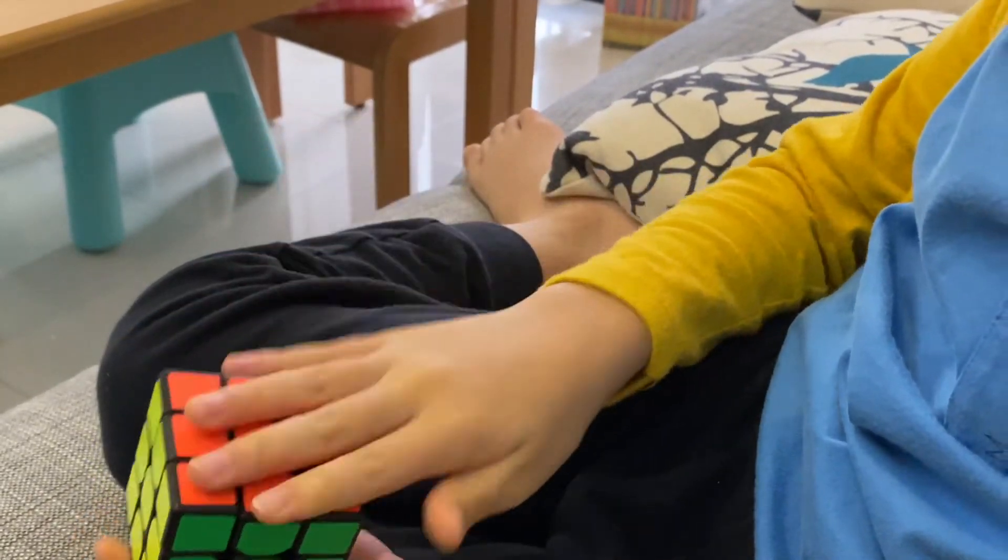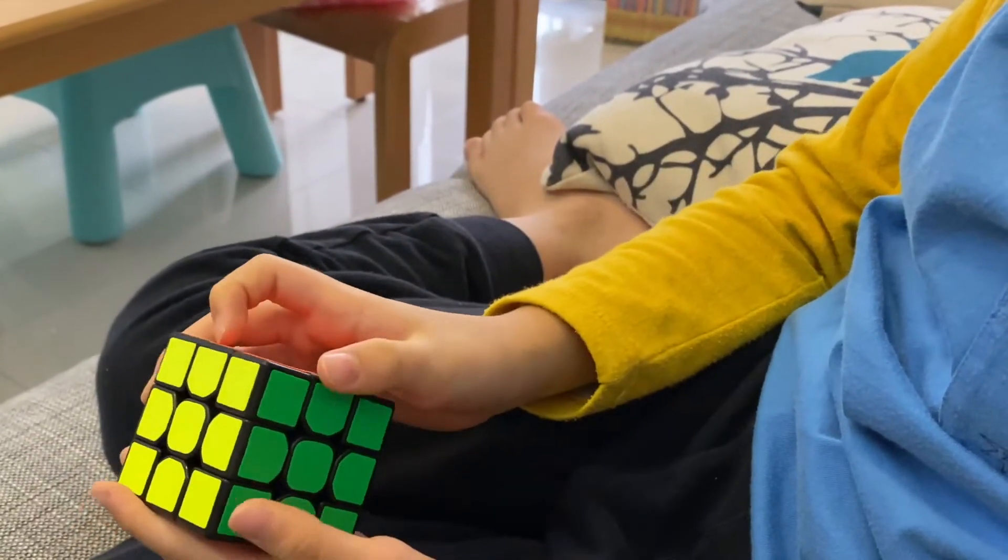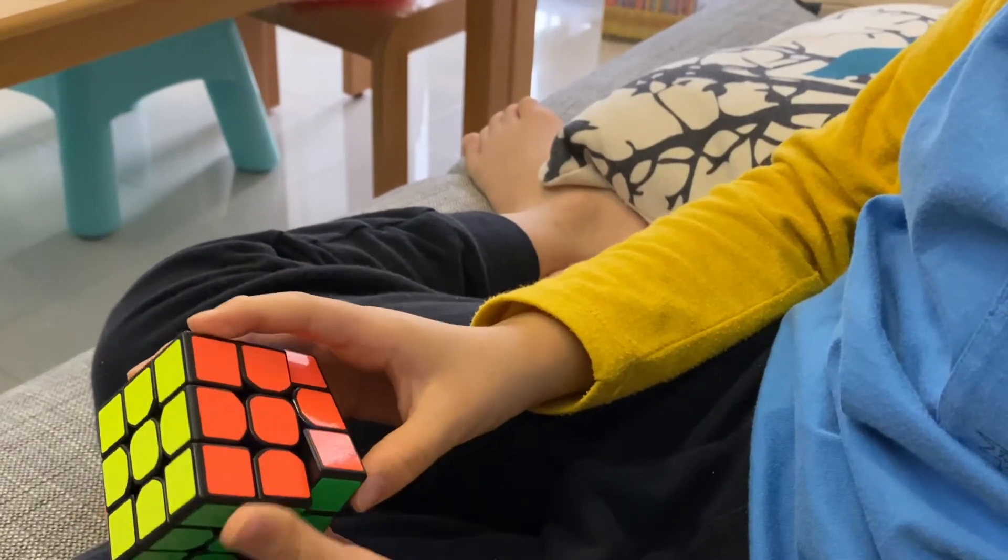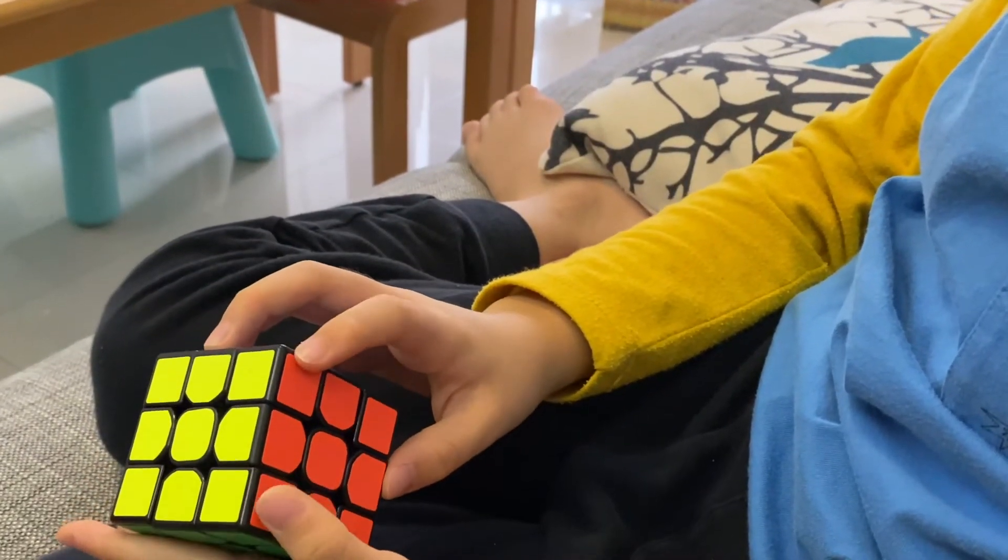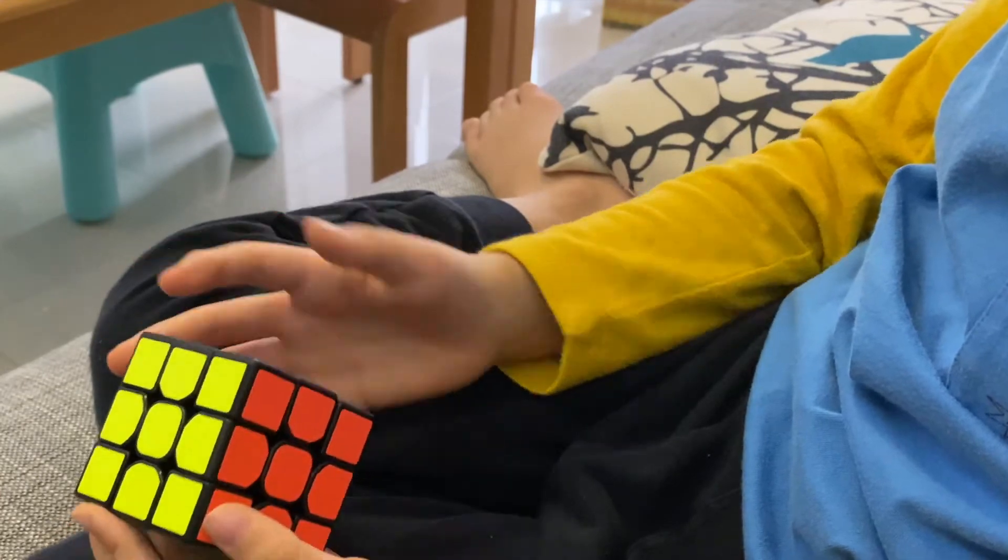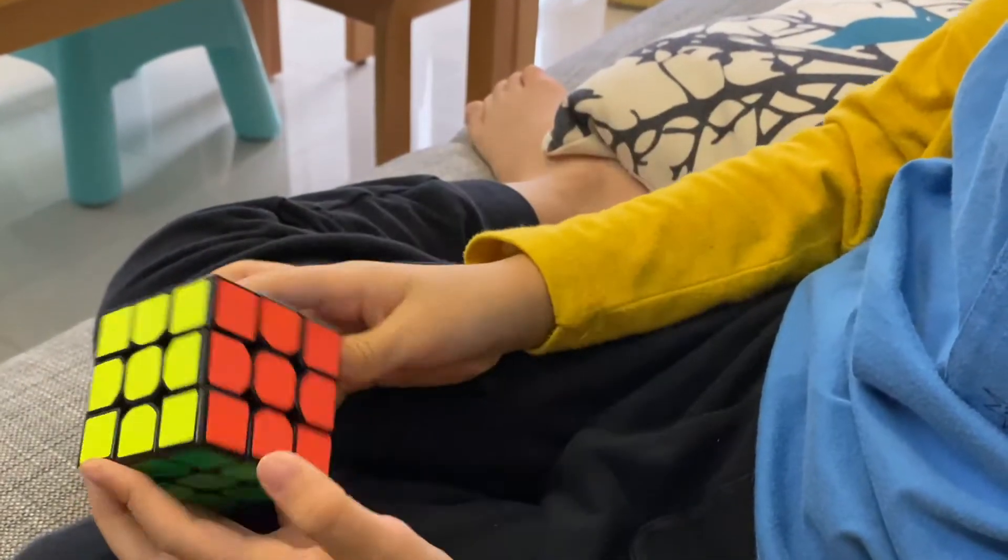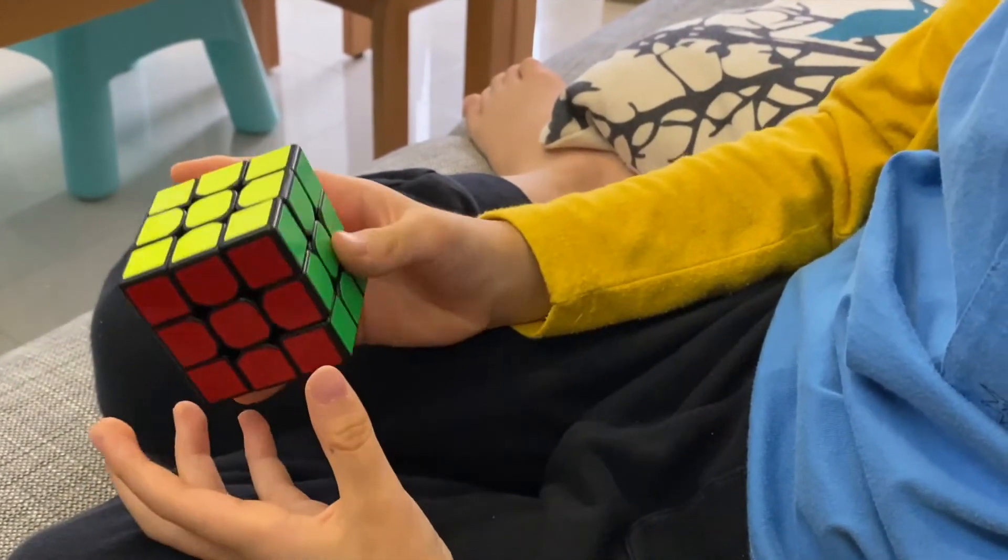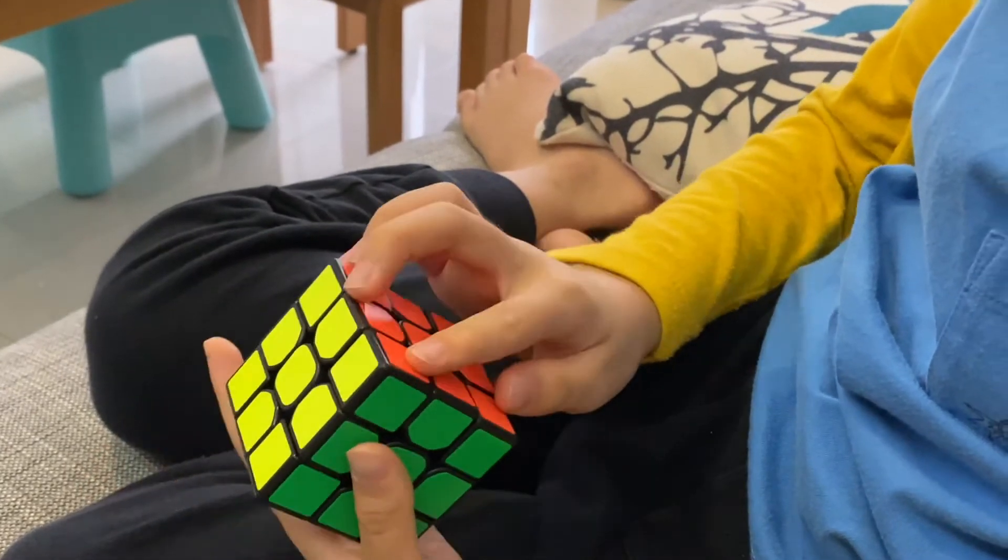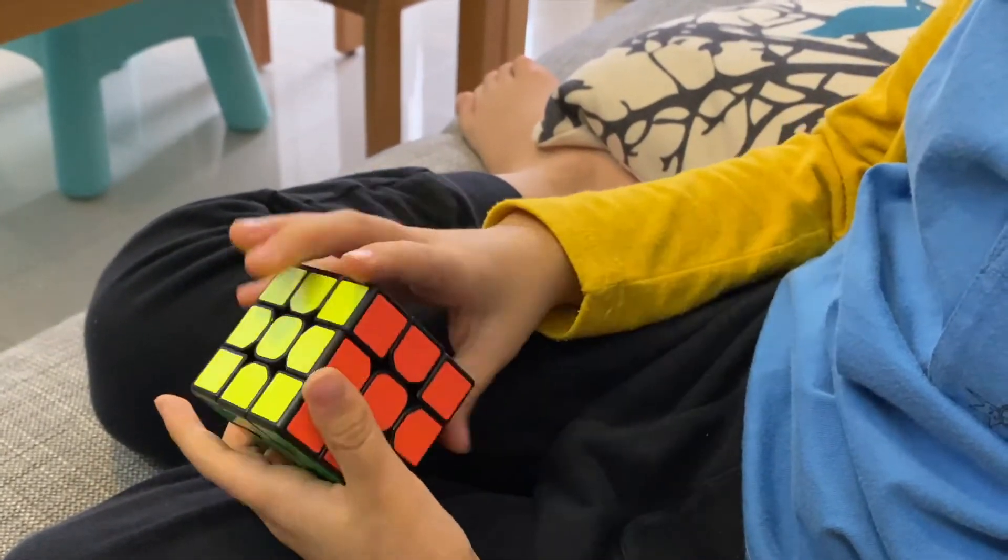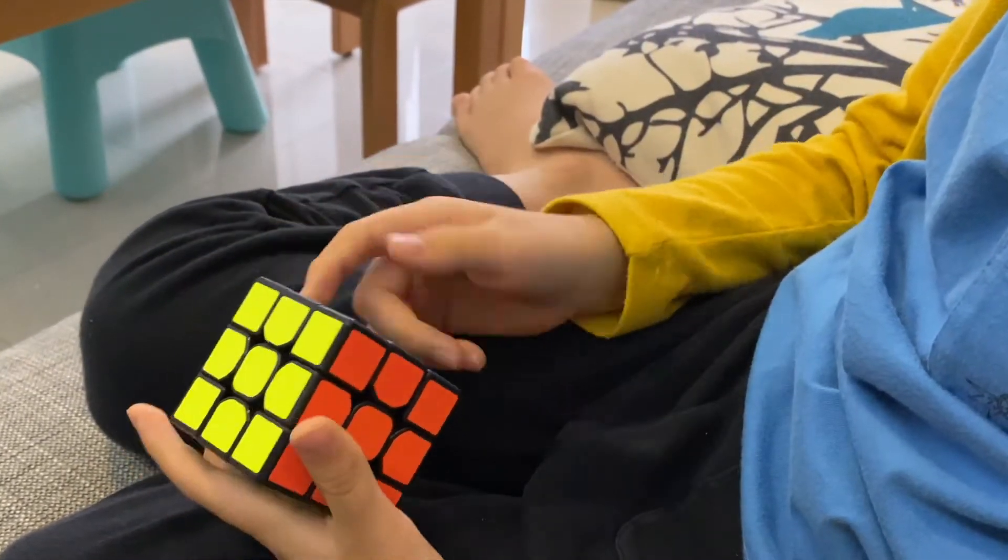If you don't have one side completely solved, then you just find one side that's actually just any side, yeah, just any side. Then you can do the algorithm. Then you have one side that's complete. Then you just do it and then you will finish it.